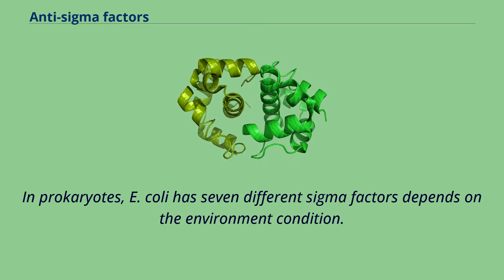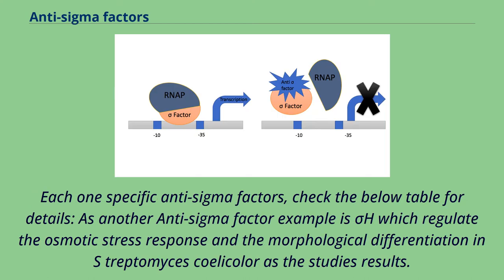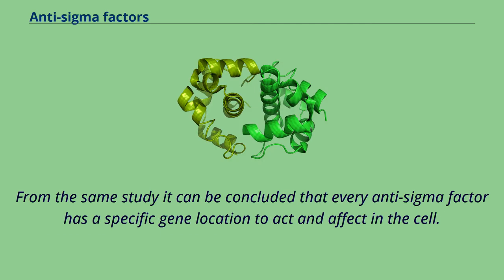In prokaryotes, E. coli has seven different sigma factors depending on the environmental conditions, each with a specific anti-sigma factor — check the table below for details. As another example, sigma H regulates the osmotic stress response and the morphological differentiation in Streptomyces coelicolor. From the same study, it can be concluded that every anti-sigma factor has a specific gene location to act and have effect in the cell.